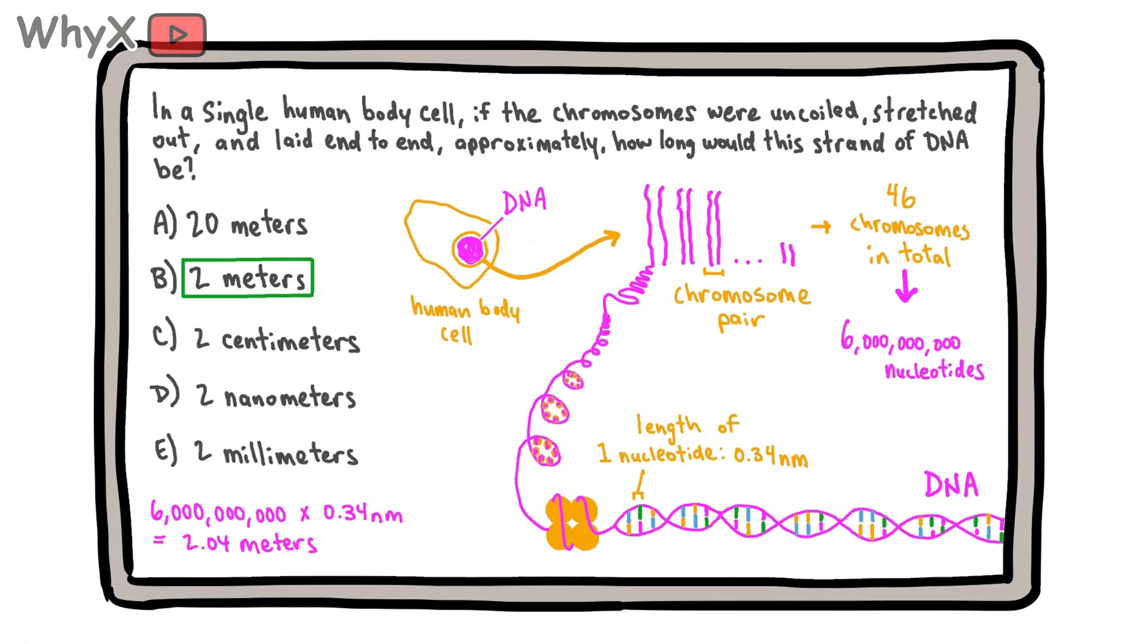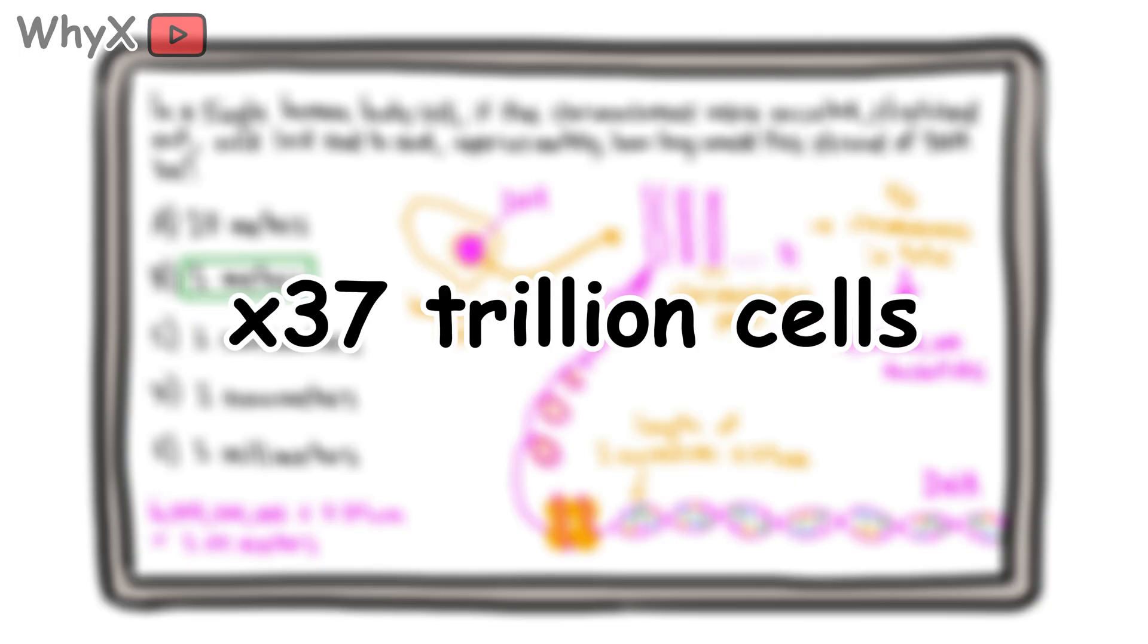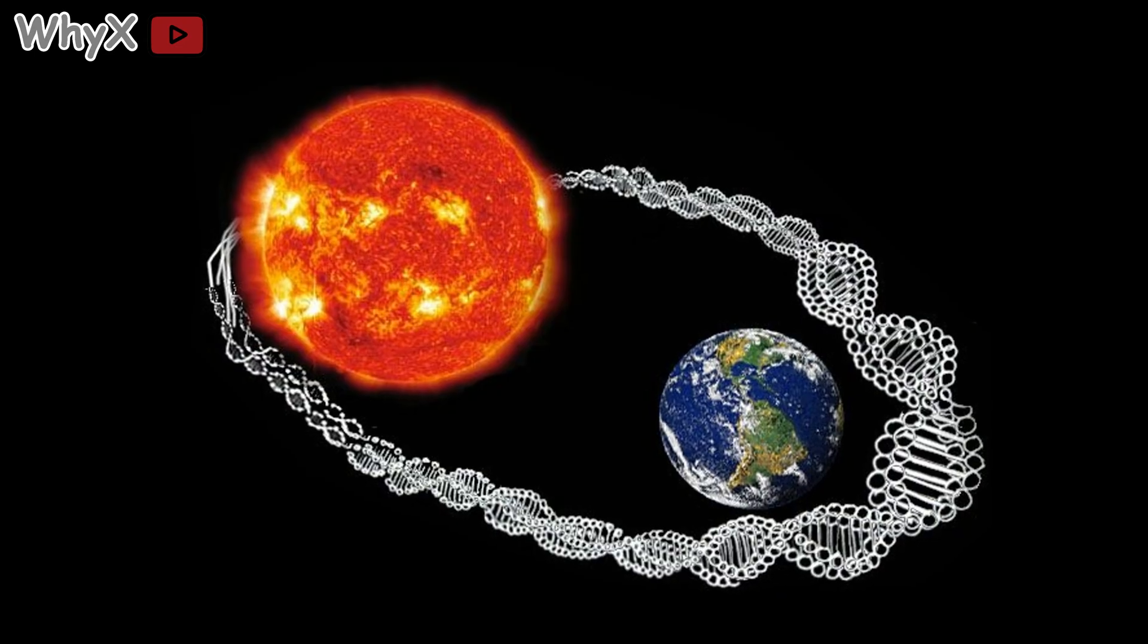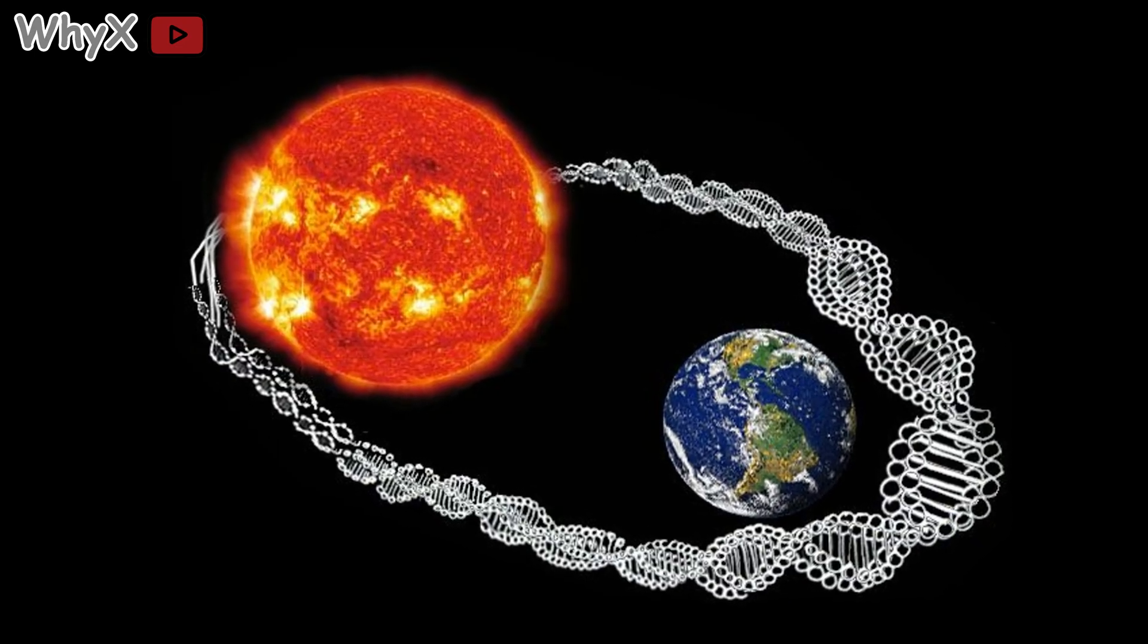Another fun fact, if you stretched out all the DNA in one human cell, it would be about 2 meters long. Multiply that by the roughly 37 trillion cells in your body, and your DNA would stretch to the sun and back hundreds of times.